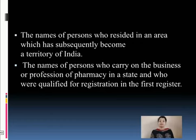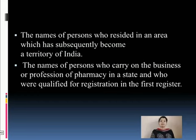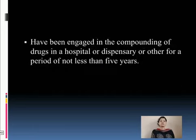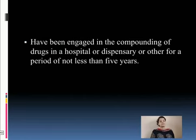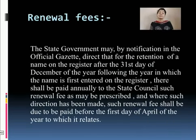The register also has certain space for people who reside in an area which has subsequently become a territory of India and who satisfy the conditions laid down by the Act for registration as a pharmacist. Additionally, the names of people who carry on the business or profession of pharmacy in a state with a certificate and who were qualified for registration in the first register are also included, as well as people who have been engaged in the compounding of drugs in a hospital or dispensary for a period of not less than five years.